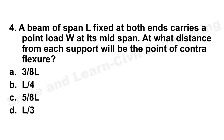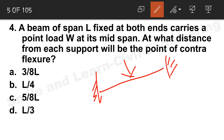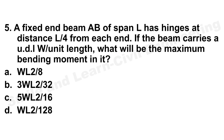Question 4: A beam of span L fixed at both ends carries a point load W at mid span. At what distance from each support will the point of contraflexure occur? There are many questions from fixed beams — please note and revise that section. If you solve this, you will find the point of contraflexure occurs at L/4. Option B is the correct answer.